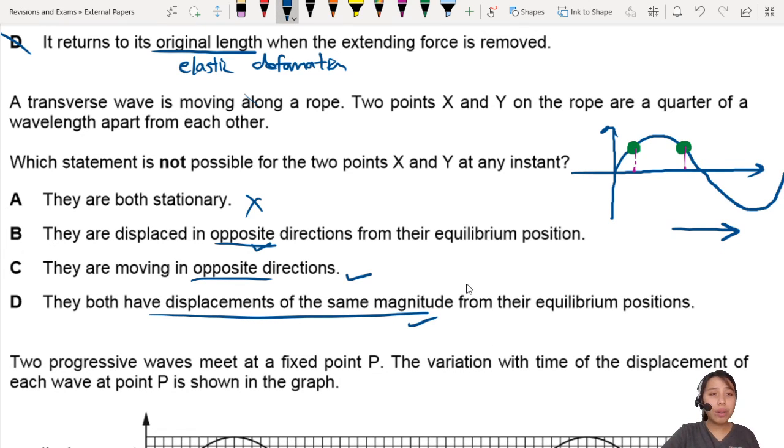So A is the only one where it's not possible - both are stationary. However, in a stationary wave you may have something like that. Wait, do we have that? Stationary waves are wavelength apart. Oh no, we don't have that too. So we don't have that if you are a quarter of a wavelength apart. Not possible.